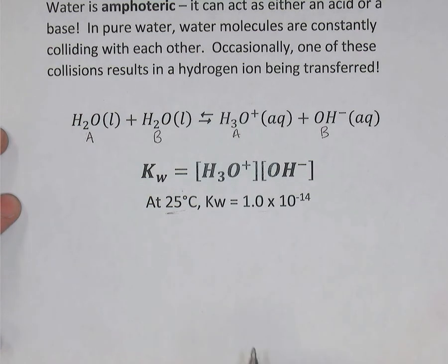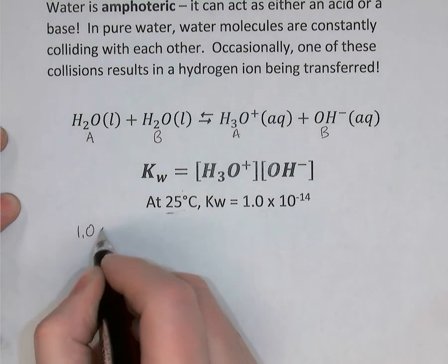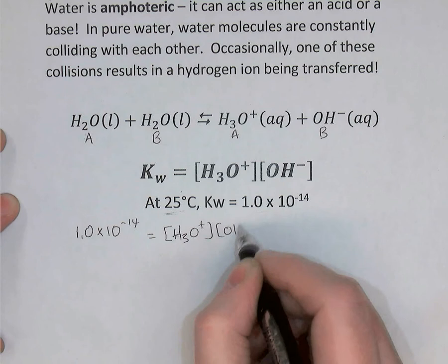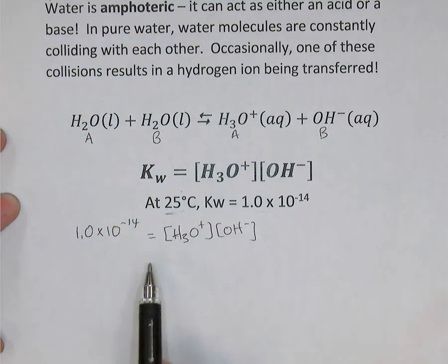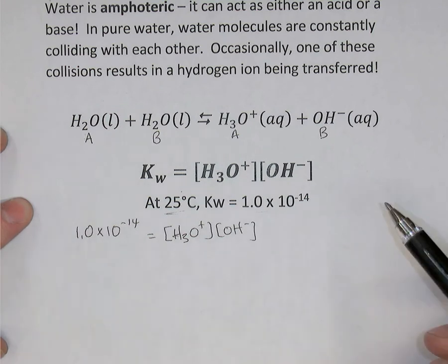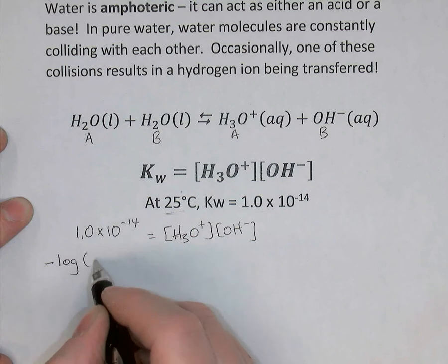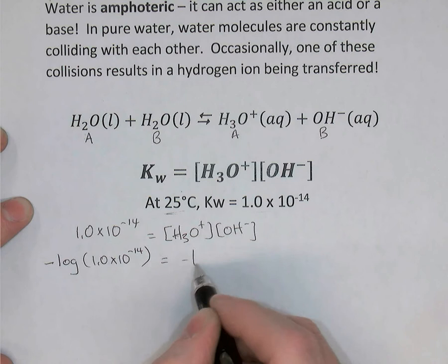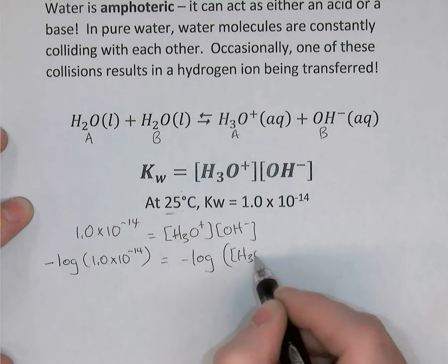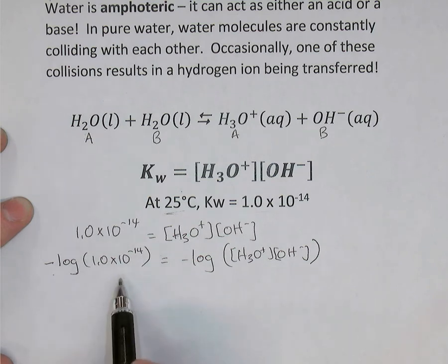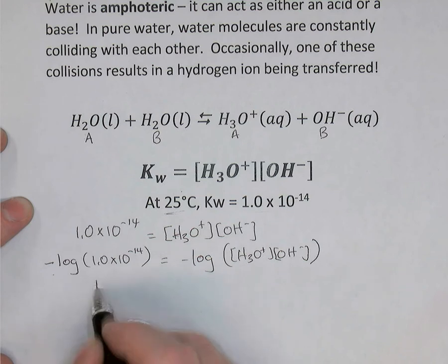Now the KW value 1.0 times 10 to the minus 14 means I can write the equation 1.0 times 10 to the minus 14 equals the hydronium concentration times the hydroxide concentration. And that's useful when you know one of these concentrations, you can calculate the other. Now if you've taken precalculus math, then you might want to copy down what I'm going to do next. If you haven't taken precalculus math, then just watch what I'm going to do and then copy down the final result. The negative logarithm of both sides of this equation, we get the negative logarithm of the KW equals the negative logarithm of this product, the concentration of hydronium times the concentration of hydroxide. Now the negative logarithm of 1 times 10 to the minus 14, I hope everybody easily recognizes that that's going to give me 14.00. You can verify that if you like by just doing it on a calculator.